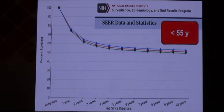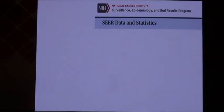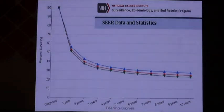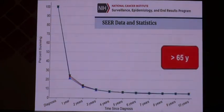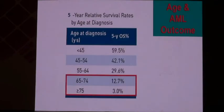In people less than 55, the survival of almost 50% of patients is probably cured with their acute leukemia. However, just one decade above — in the 55-65 range — the curve drops to almost 30%. And for the most common age group above 65, the long-term survival is only around 10%.